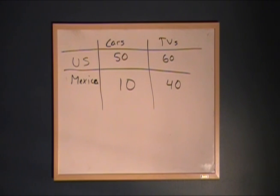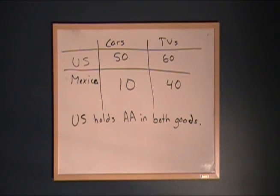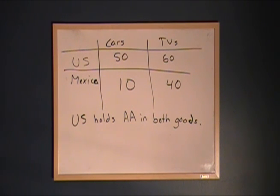We can see that the United States has an absolute advantage in producing both cars and TVs — using the same resources, the United States can produce more cars and more TVs than Mexico. But does that mean the United States should specialize in both and let Mexico sit idle? No, absolutely not. We can find ways to trade and make both countries better off. What we need to do is find out in which good each country holds a comparative advantage.